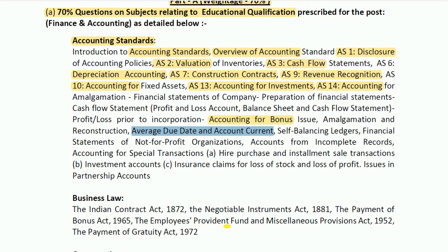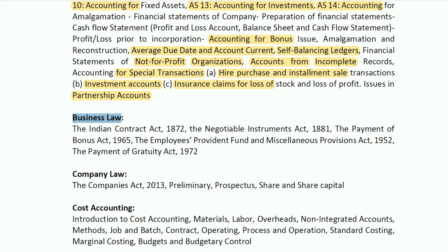Additional accounting topics include average due date account, self-balancing ledger, financial statements for not-for-profit organizations, accounts for incomplete records, and accounting for special transactions such as hire purchase and installment transactions, investments account, insurance claims, and issues in partnership accounts.